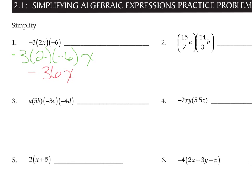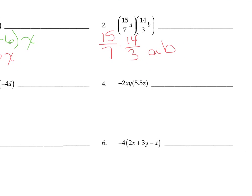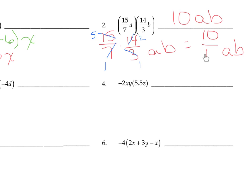On number 2, same idea. Just bring the coefficients to the front, so we have 15 over 7 times 14 over 3. The variables stay in the back. You could do some cross-canceling here: 15 and 3 are both divisible by 3, and 14 and 7 are both divisible by 7. Then multiply the new numbers: 5 times 2 is 10, 1 times 1 on the bottom. This makes 10AB, because 10 over 1 is 10.